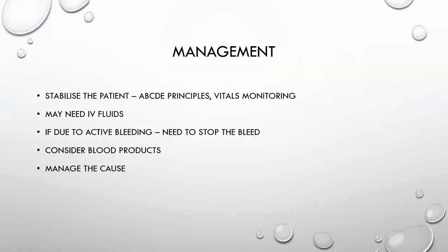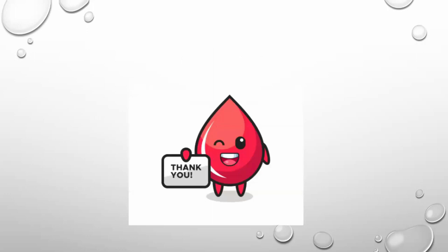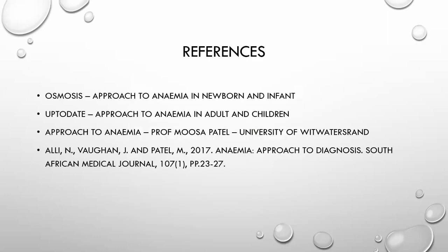Management always starts with stabilizing the patient using ABCDE principles, monitoring vitals, and considering IV fluids. Depending on how low the hemoglobin is, blood products may be needed. Active bleeding requires intervention to stop the source before Hb continues to drop. Ultimately, manage the underlying cause: iron supplementation for iron deficiency, B12 replacement for B12 deficiency, and blood transfusions for conditions like thalassemia. Once you've completed your approach and identified the diagnosis, treat accordingly.